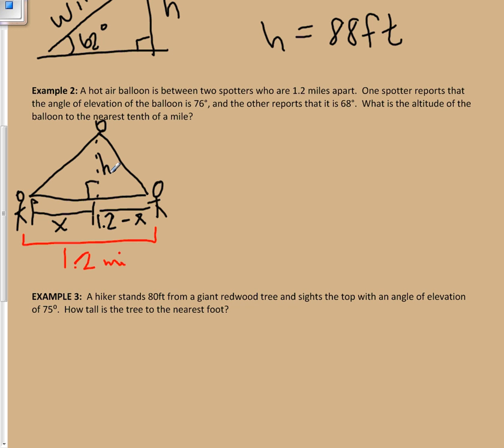So for me to find the height of this balloon, I'm going to use the fact that I have the angles. This one was 76, and this one was 68. And I kind of have the adjacent side, that's the x, so the 1.2 minus x, and I want the opposite side, which is h. So that means I'm going to be using the tangent. So the tangent of 76 degrees is my opposite h over my adjacent, which is x.